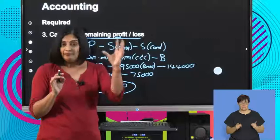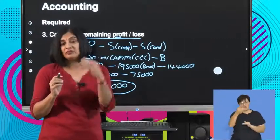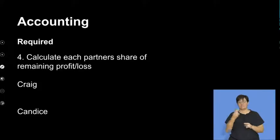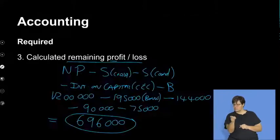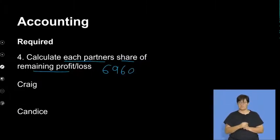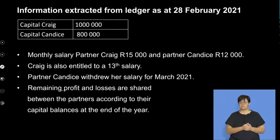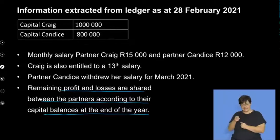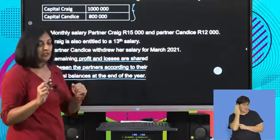So that's our remaining profit. As you can see, there's a difference between remaining profit and net profit — it's the profit after salaries, after interest on capital, after the bonus. Now, remaining profits and losses are shared between the partners according to their capital balances at the end of the financial year. Craig's capital was 1,000,000 and Candice's was 600,000.